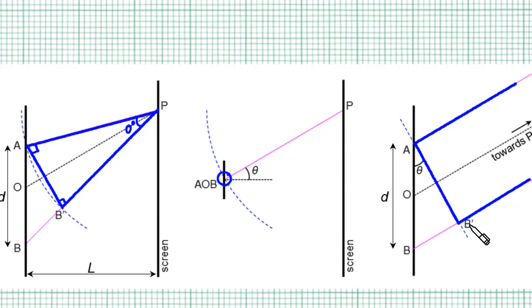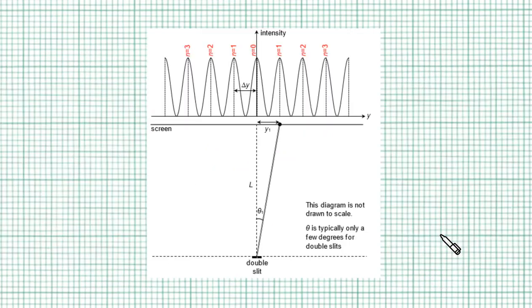Now, remember, BB' is the path difference. If you spot this right-angled triangle here, you'll realize that the path difference is actually D sine theta. Because D is the hypotenuse of this right-angled triangle. And the path difference is the opposite side. That's why when it comes to the double slit, we stop calculating AP minus BP. Instead, we just have to calculate D sine theta.